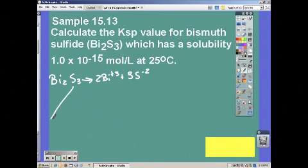We have 2 bismuths and 3 sulfurs. We didn't start with any. They gave us the solubility though, which was our x.